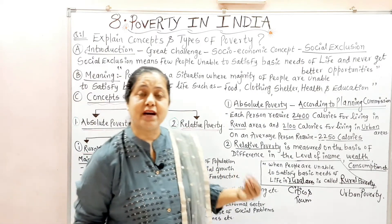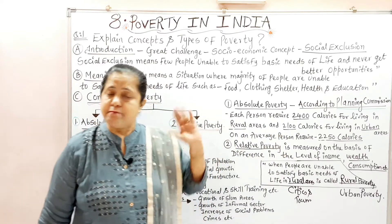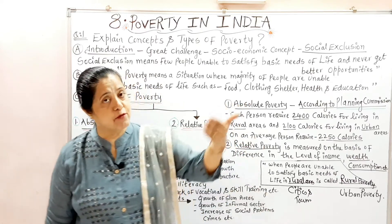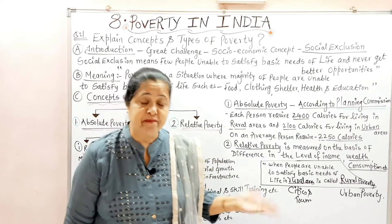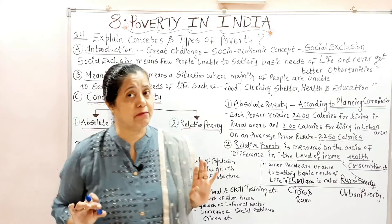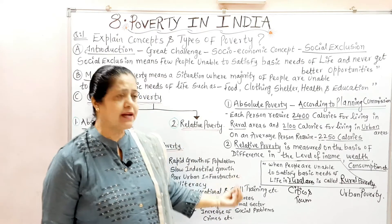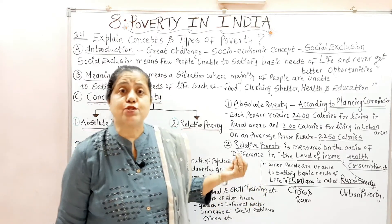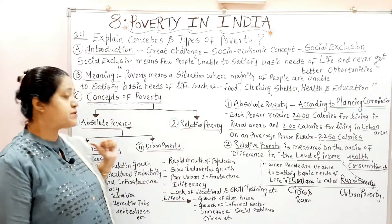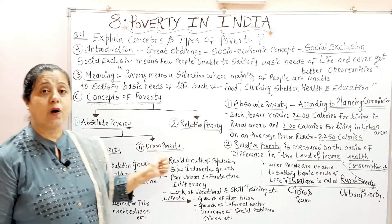I have presented everything easily in the notes. You don't need to take tension — just understand. Once your concept is clear in your mind, look at the notes I've given on the website. This will make everything clear, and economics will become the highest scoring subject for you. So yes — absolute poverty is divided into two parts: rural poverty and urban poverty.